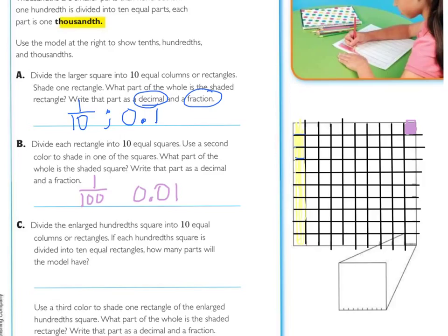Now, we're going to be working on our new place value within the decimals. Divide the enlarged hundredths square into ten equal columns or rectangles. That's this square right here. These little lines show that they're enlarging this little square. If each hundredth square is divided into ten equal rectangles, how many parts will the model have?